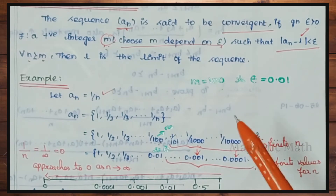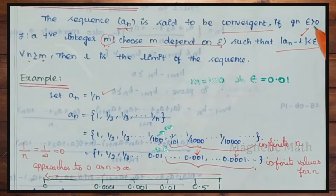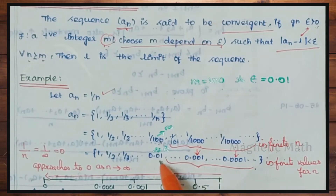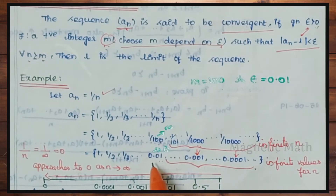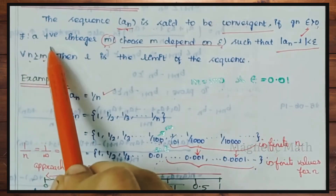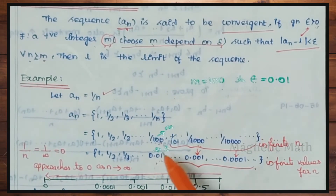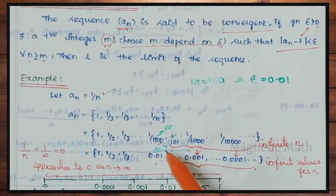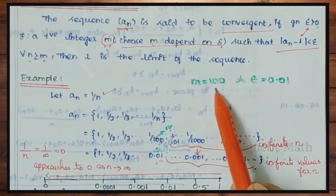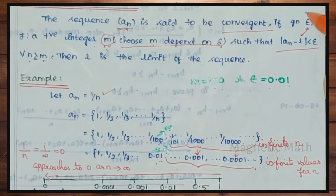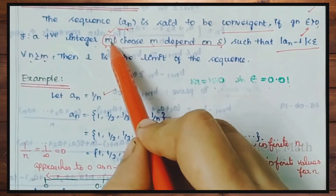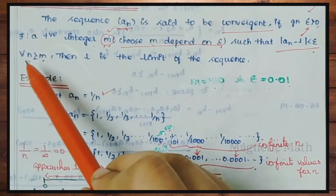Now applying the definition: epsilon is greater than 0. Epsilon is the smallest positive value, so let's say epsilon equals 0.001. There exists a positive integer m — choose m depends on epsilon. So I choose epsilon equals 0.001, and here I choose m equals 100000. So we have epsilon and m, and modulus of an minus L is less than epsilon for all n greater than or equal to m.